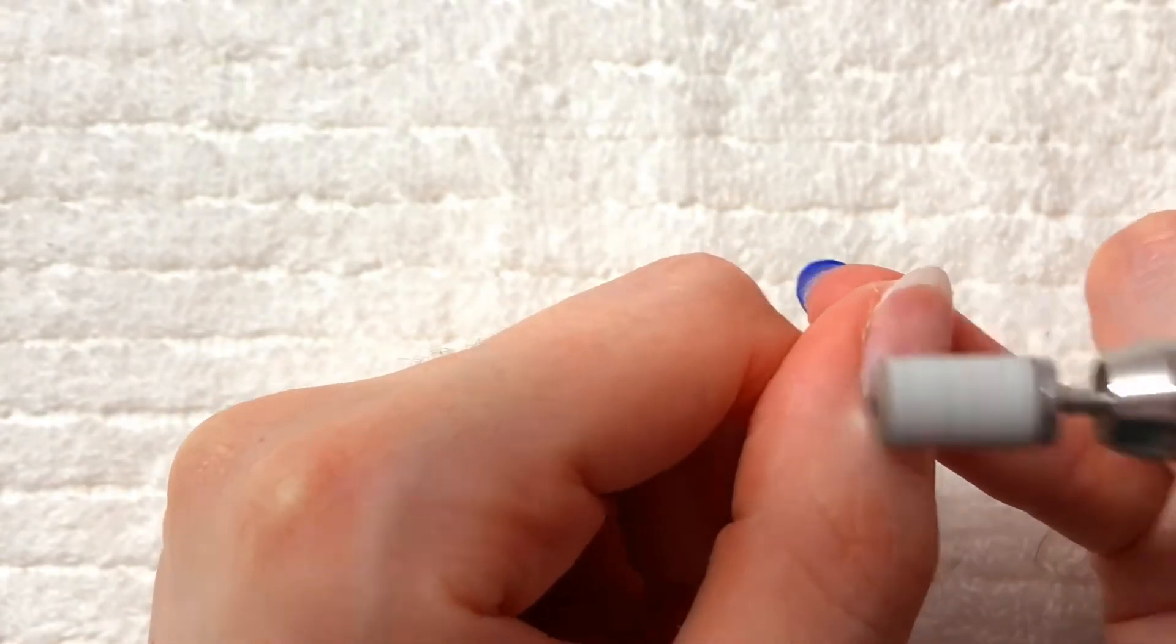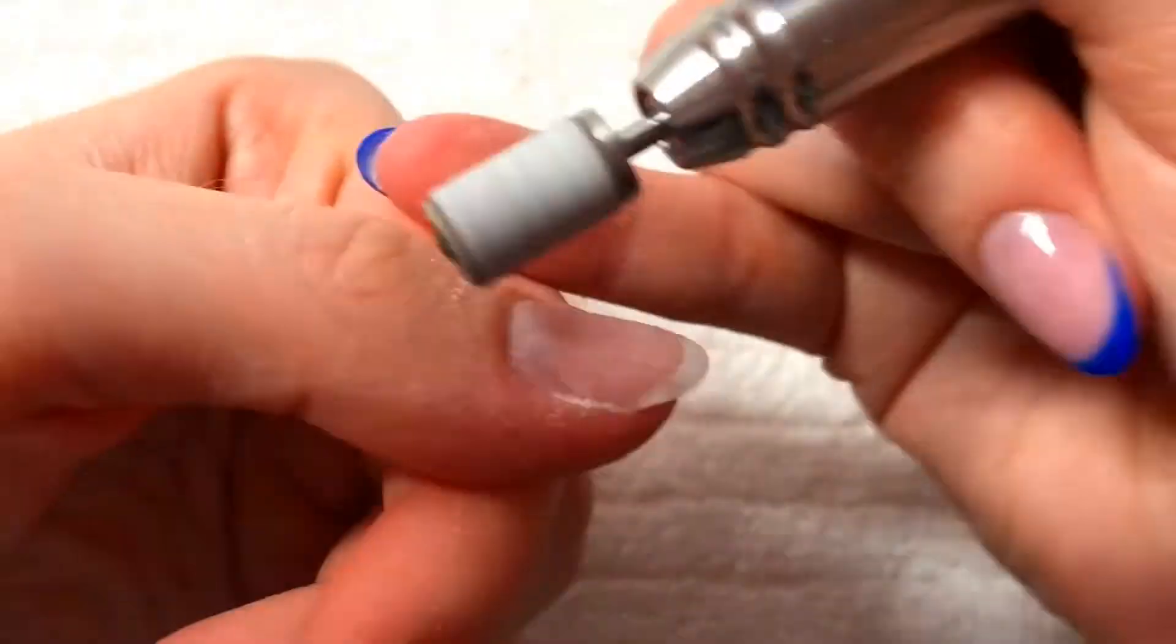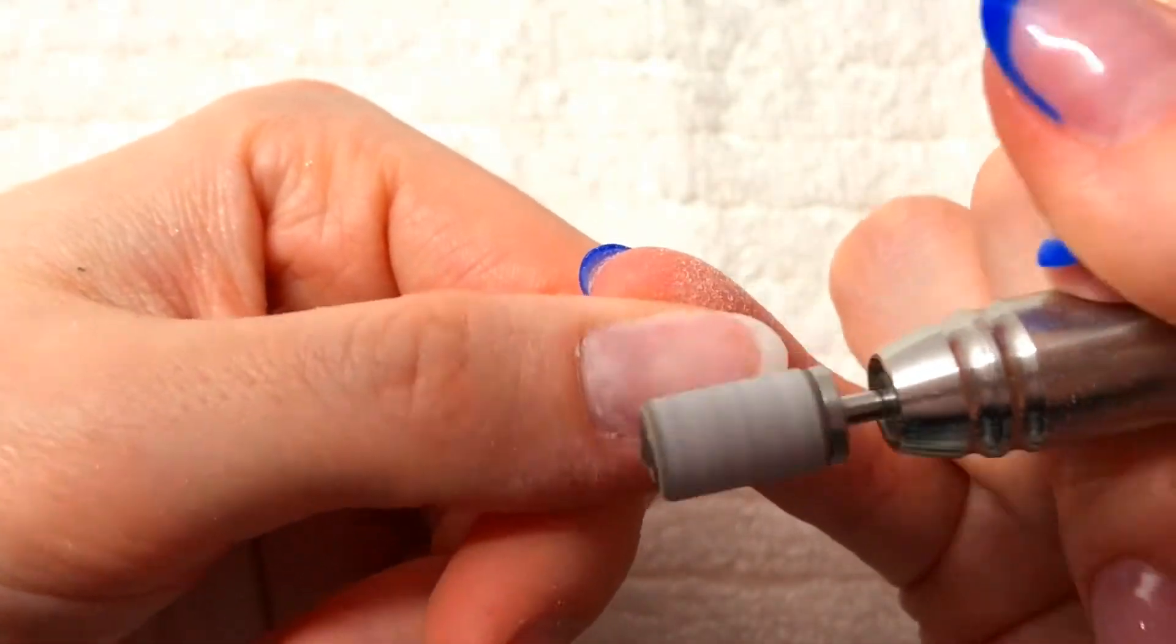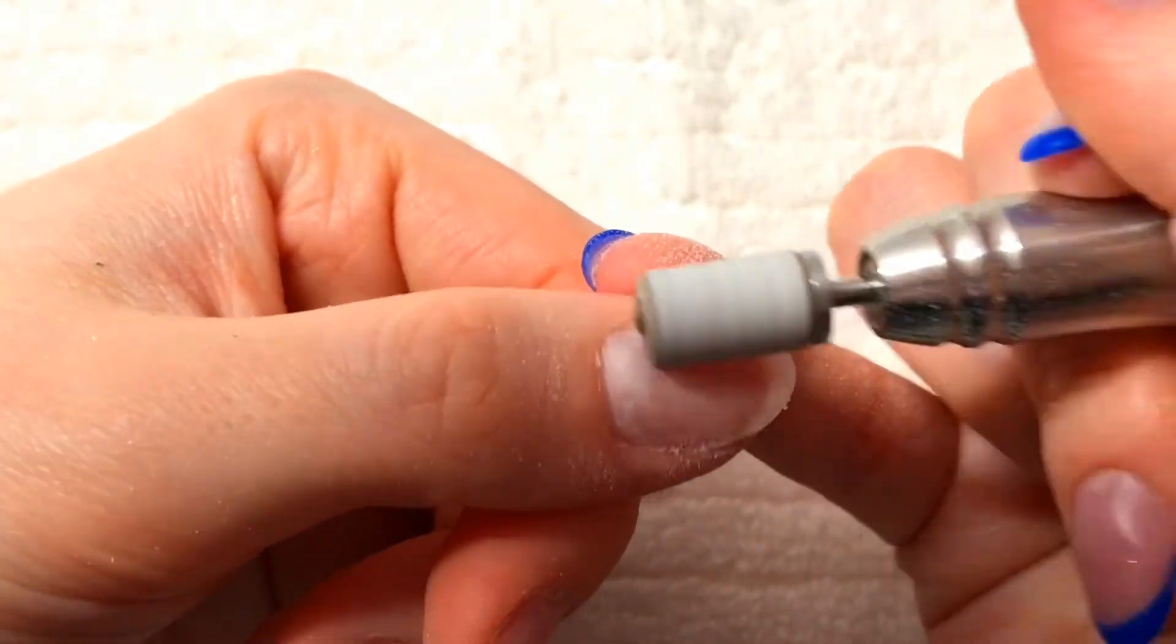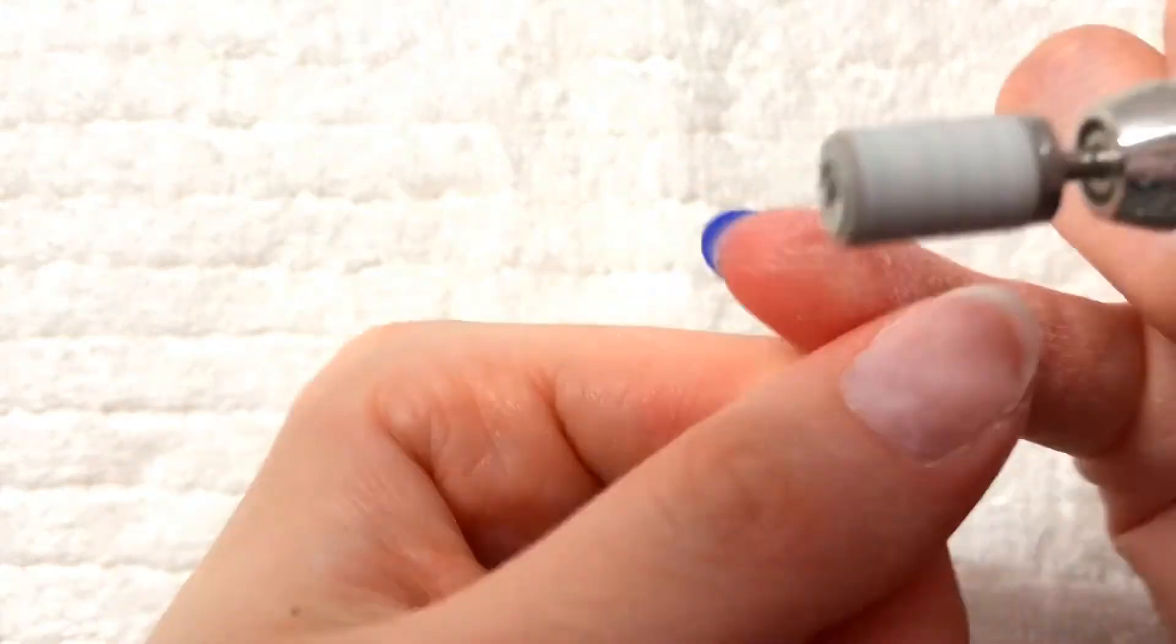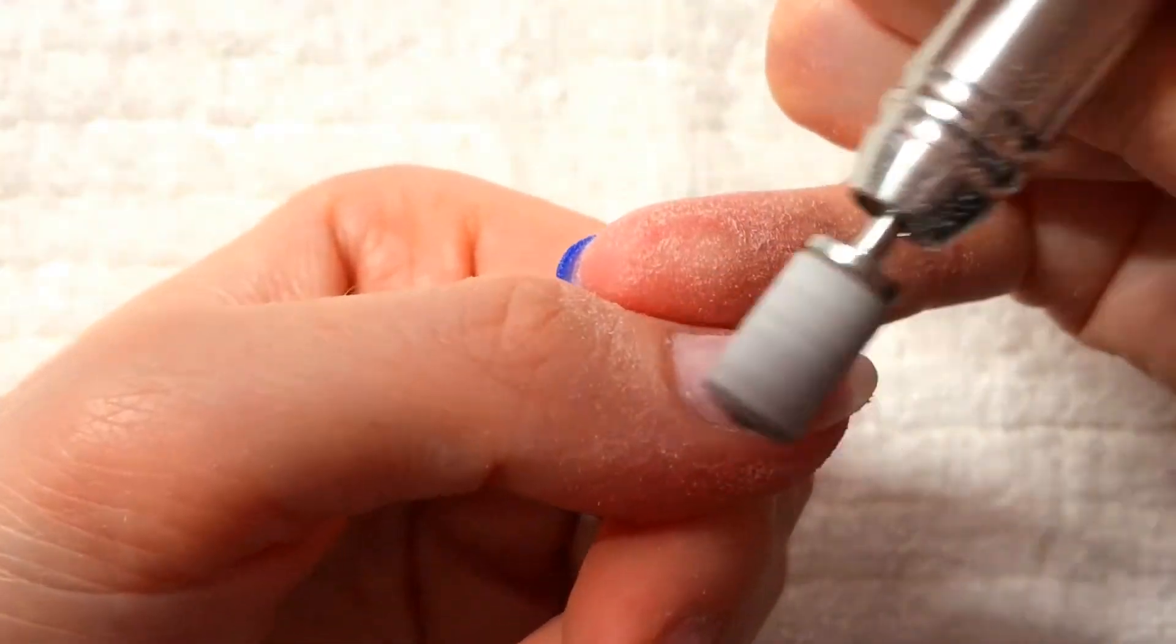After I'm happy with the shape, I'm using my e-file with my mandrel bit with a fine sanding band on it. You can prep your nails with a regular hand file. I just like using an e-file because it's easier and it goes by faster and I just notice I have less lifting with it.